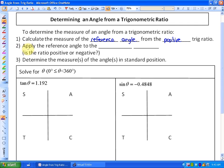Secondly, apply the reference angle to the appropriate quadrants. We've talked about how it affects it if the ratio is positive or negative based on all students take calculus, or all of them: sine is positive, tan is positive, and cosine is positive. And thirdly, determine the measures of the angles in standard position.